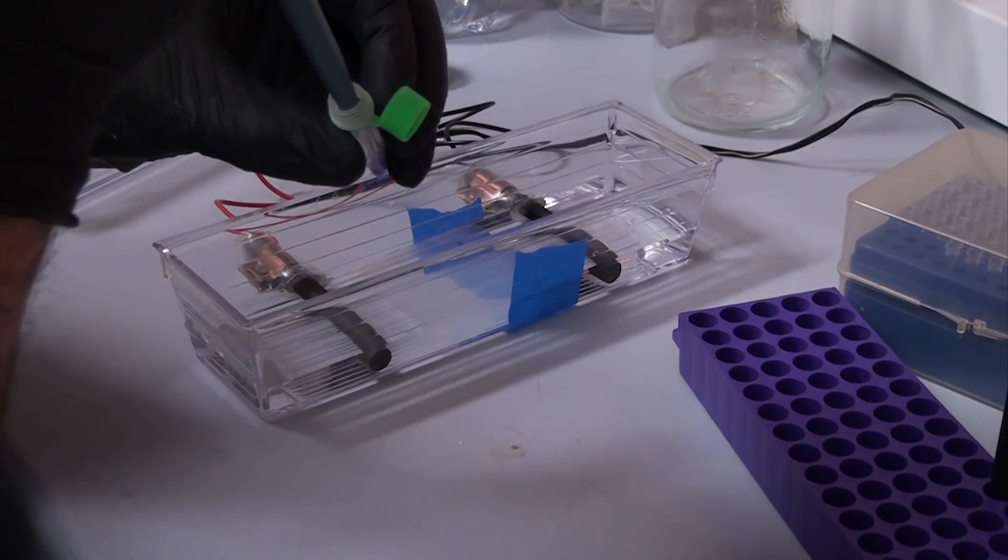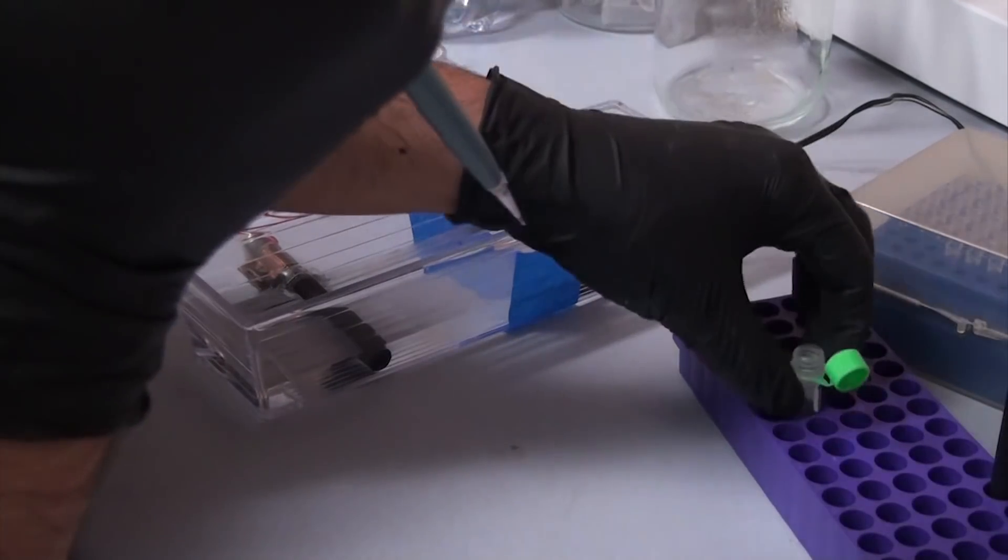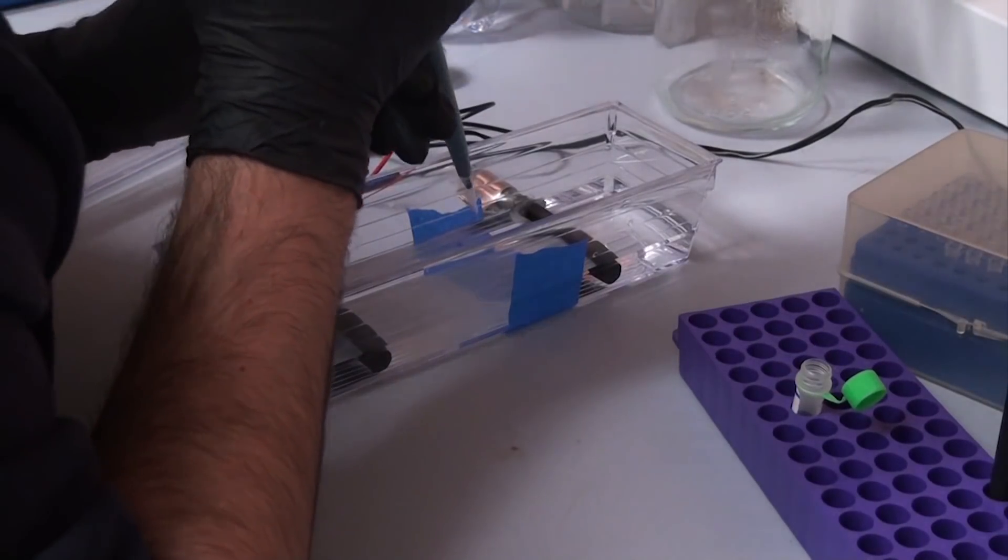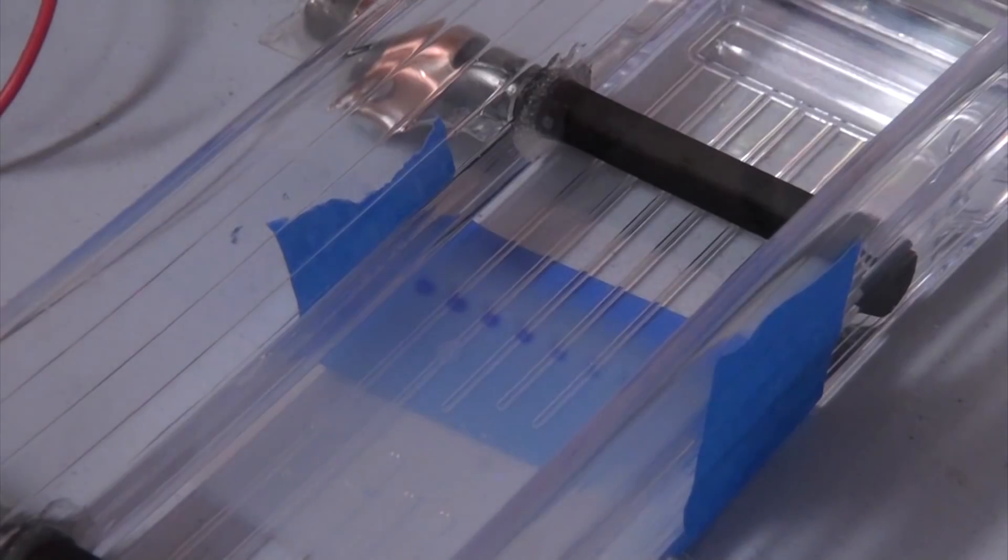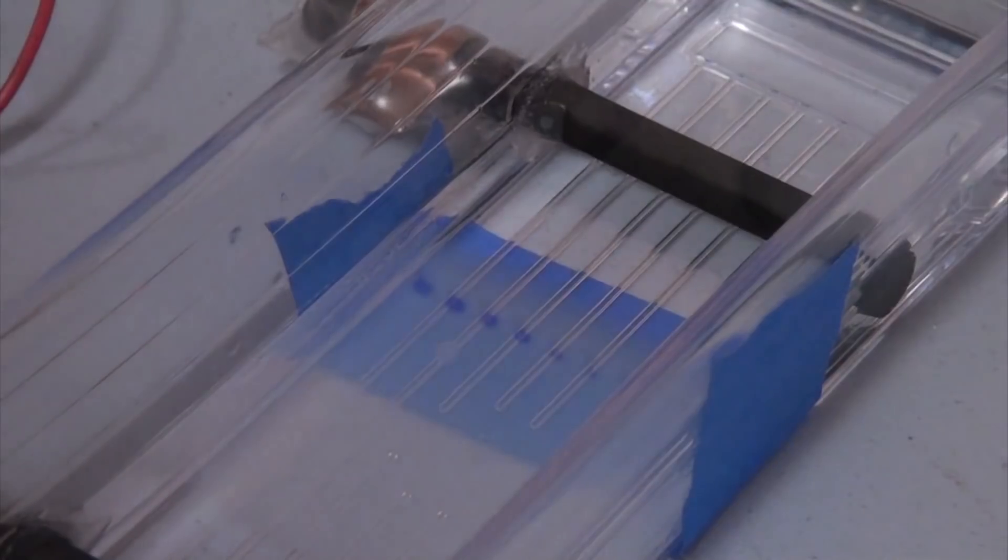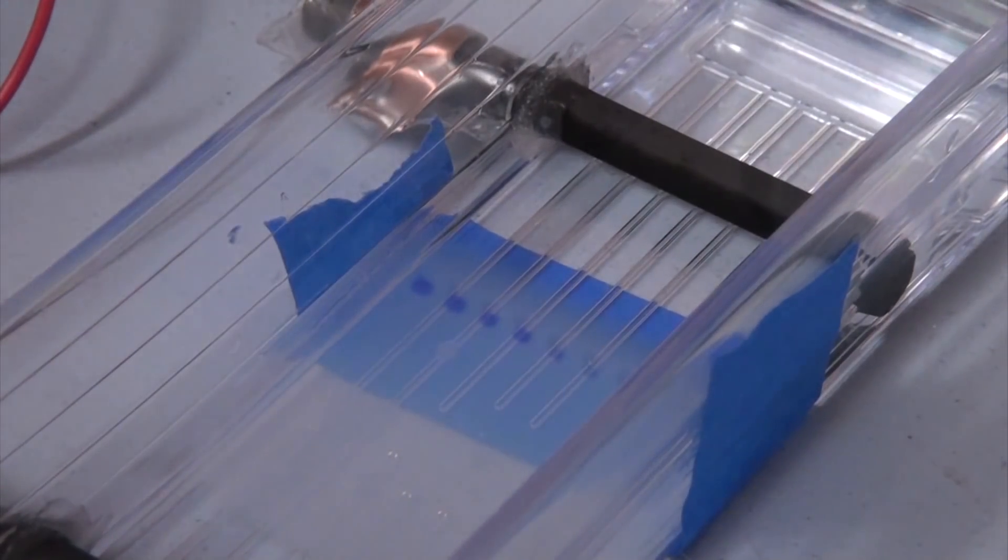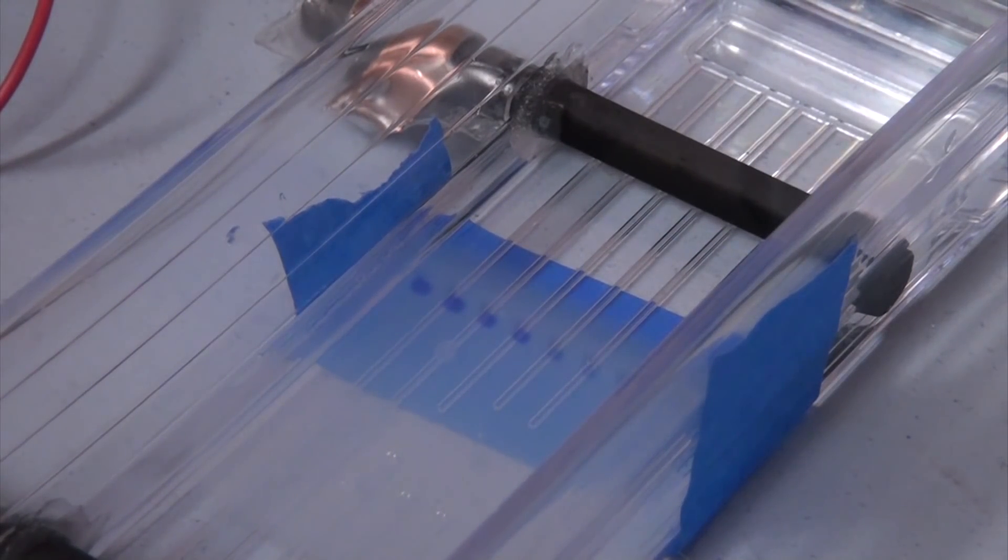With the newly painted transilluminator, I wanted to really dial in the settings, so I ran a new gel with decreasing concentrations of ladder, that control mixture I mentioned earlier. From left to right, I started with 5 microliters of ladder, and decreased 1 microliter in each successive well, and did 0.5 microliters in the 6th well.